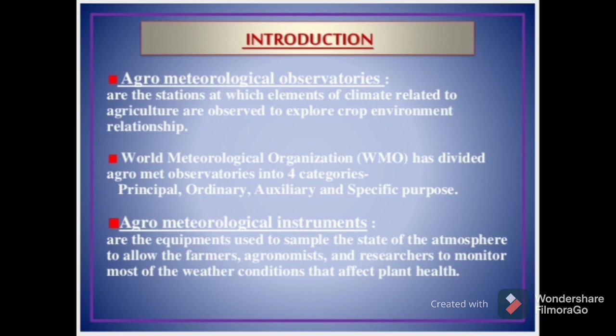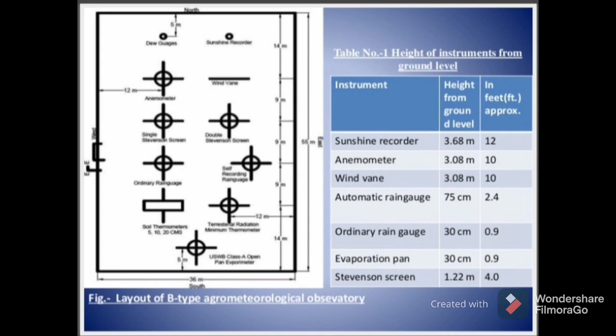Agro-Meteorological Instruments are the equipment used to sample the state of the atmosphere to allow farmers, agronomists, and researchers to monitor most of the weather conditions that affect plant health. Table number one shows the height of instruments from ground level, and the figure on the left side shows the layout of a key-type Agro-Metrological Observatory where you can see the instruments placed inside.